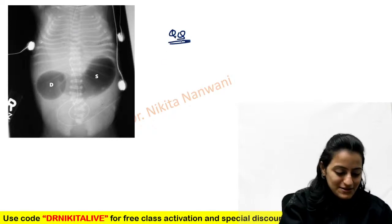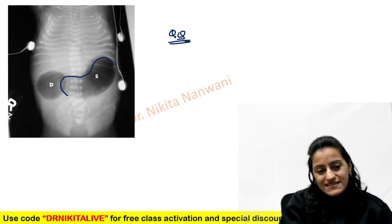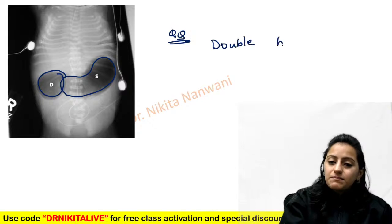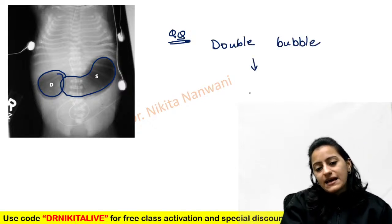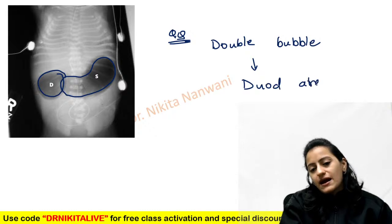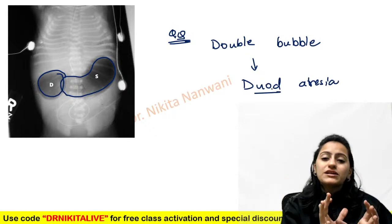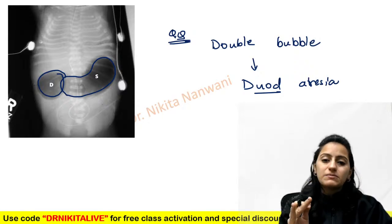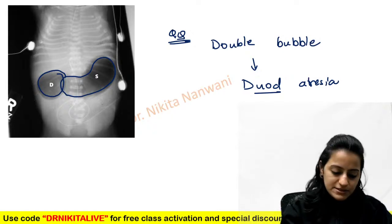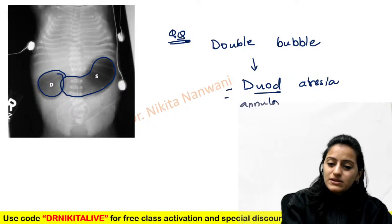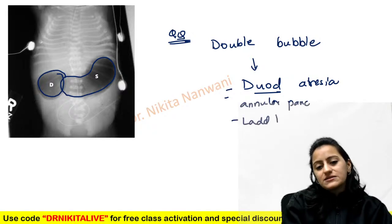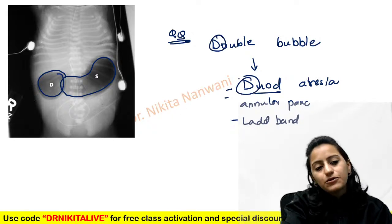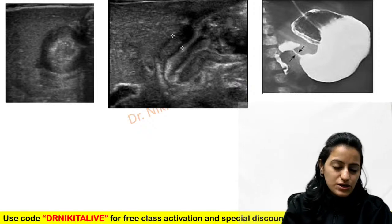Double bubble sign: single air bubble in the stomach and a second air bubble in the duodenum — seen with duodenal atresia. After the duodenum, jejunal atresia gives a triple bubble sign; ileal atresia gives multiple bubbles. Duodenal atresia can also be seen with annular pancreas or large bands. Remember D4D — duodenal atresia.